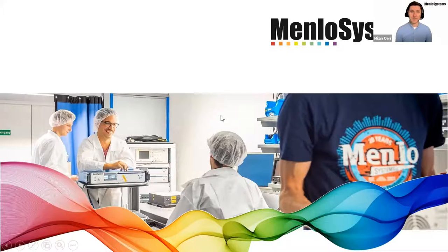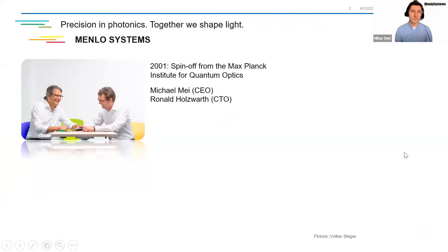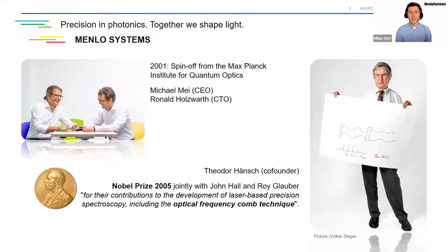Hello everyone, and welcome from my side as well to this webinar, pulled from the beautiful city surrounded by the Alps, out of Munich. For those of you who do not know Menlo Systems yet, I'd like to start this talk with a little introduction on our company. Menlo Systems is a pioneer in the invention of frequency comb technology. We are located in the southeastern part of Germany, in Bavaria, a city called Munich, close to the Alps. Our origin dates back more than 20 years as a spin-off from the Max Planck Institute of Quantum Optics. Two of the earlier PhD students, Michael Mai and Ronald Holzfeld, still hold managing positions at Menlo Systems. It was Theodor Hänsch, co-founder of Menlo Systems, whose invention and development of the frequency comb technology was awarded the Nobel Prize in 2005.